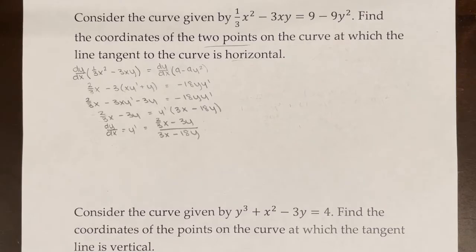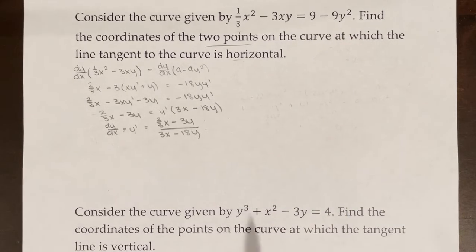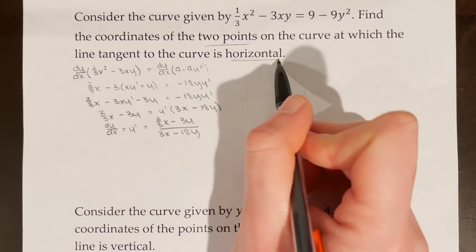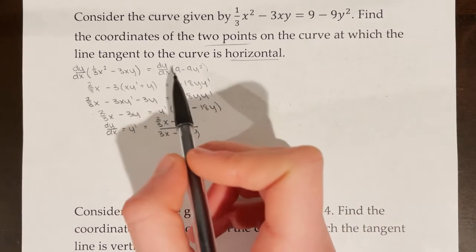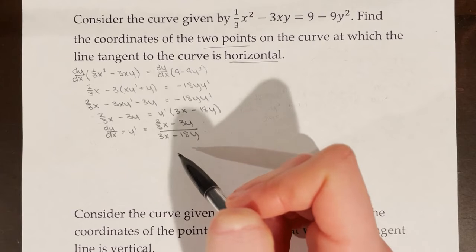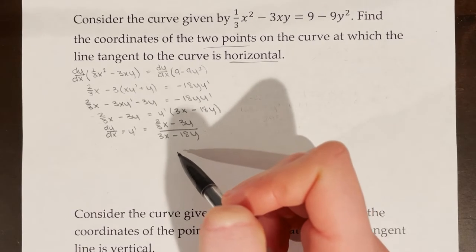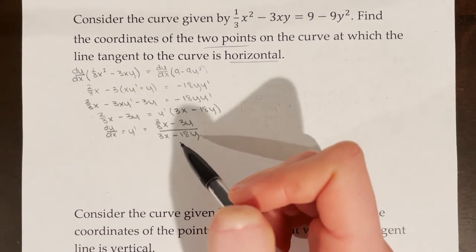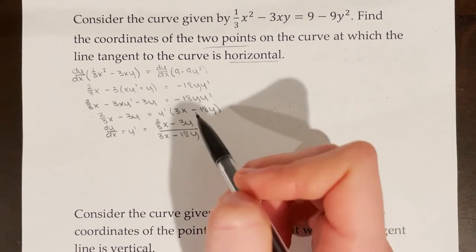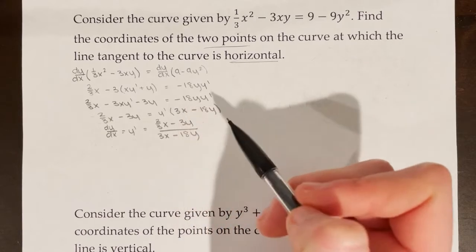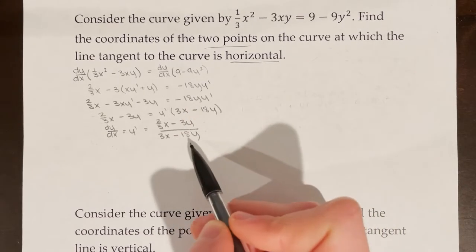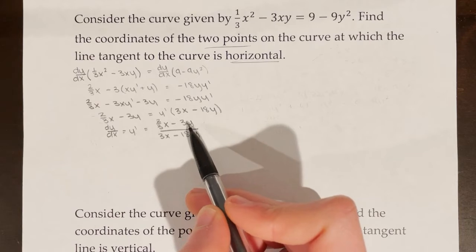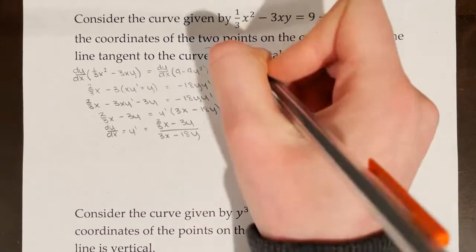Consider a second curve. Find the coordinates of the two points on the curve at which the line tangent to the curve is horizontal. The first step is to find the derivative — already done here. The next step is to set the numerator equal to 0, because that's where the tangent line will be horizontal.